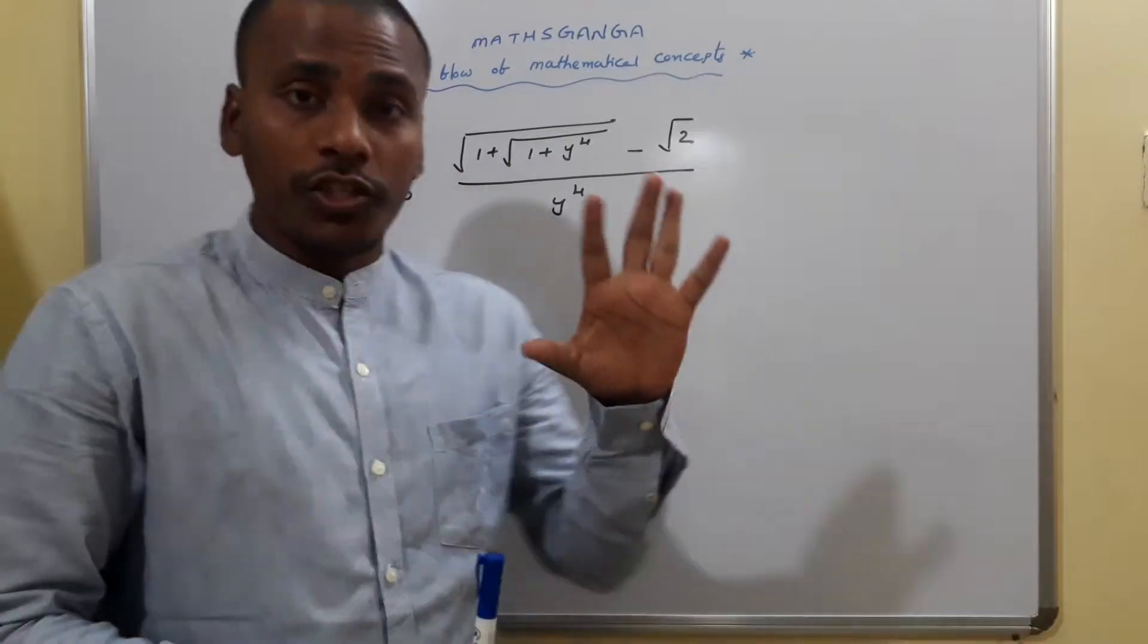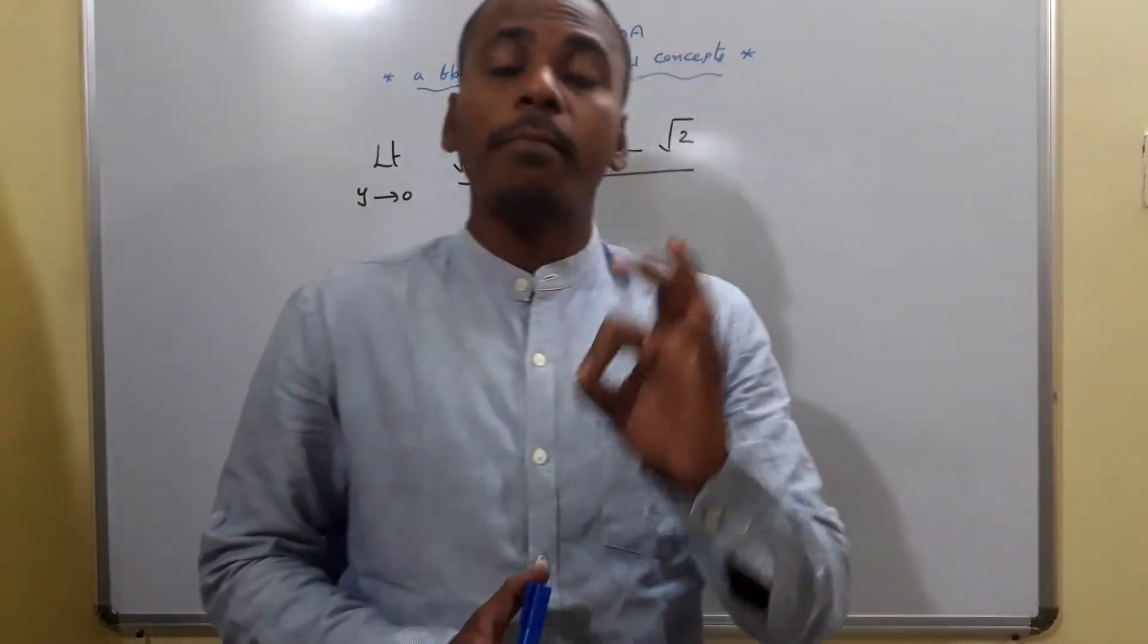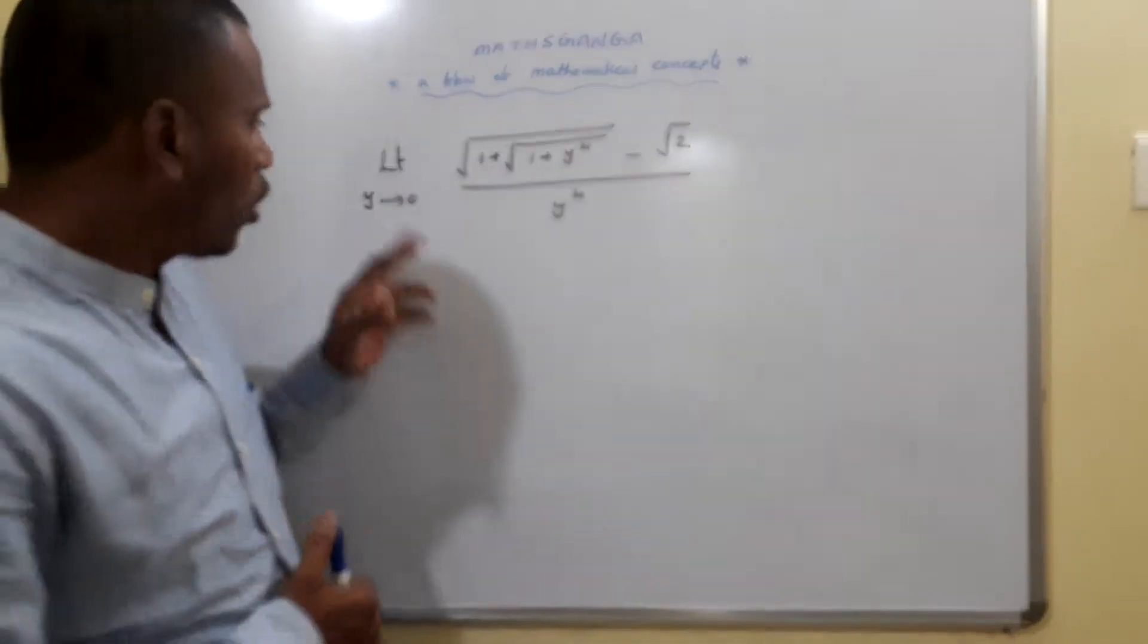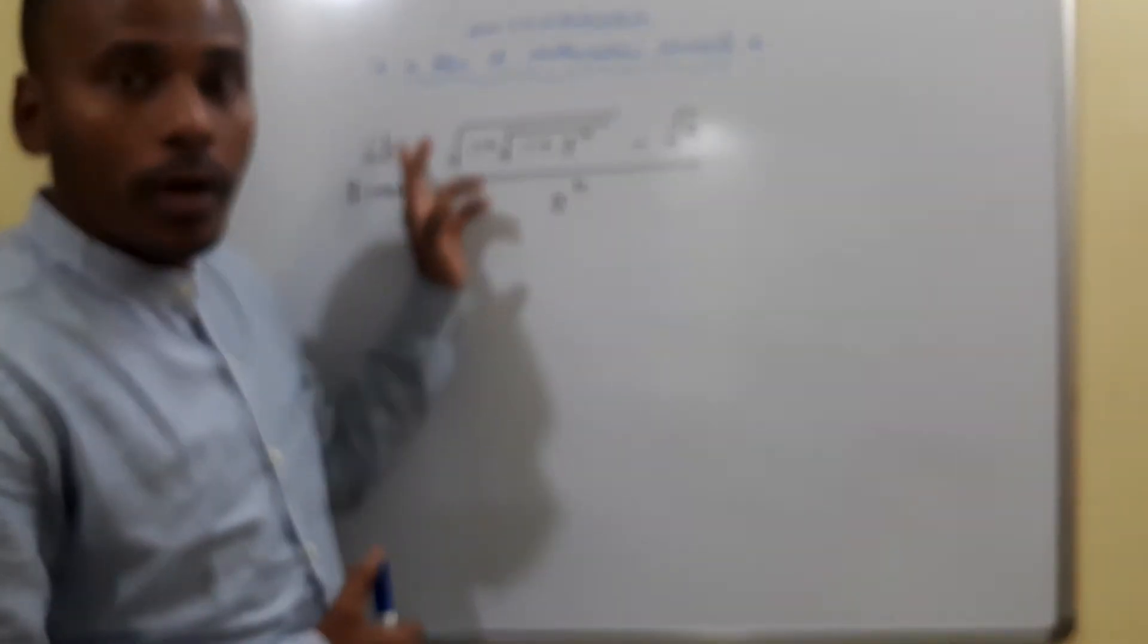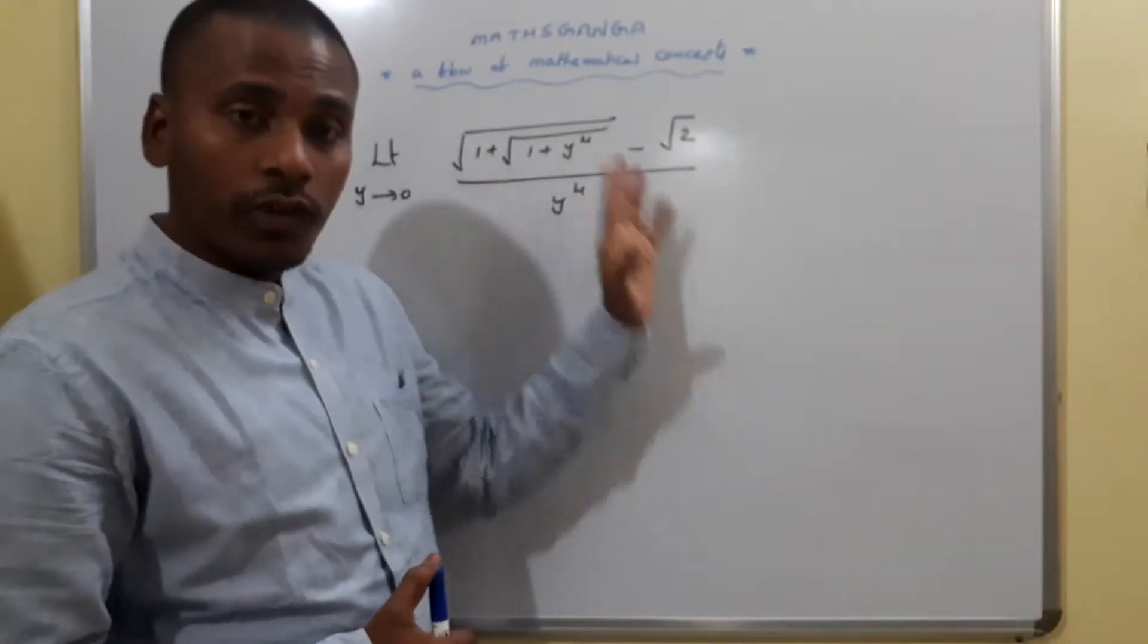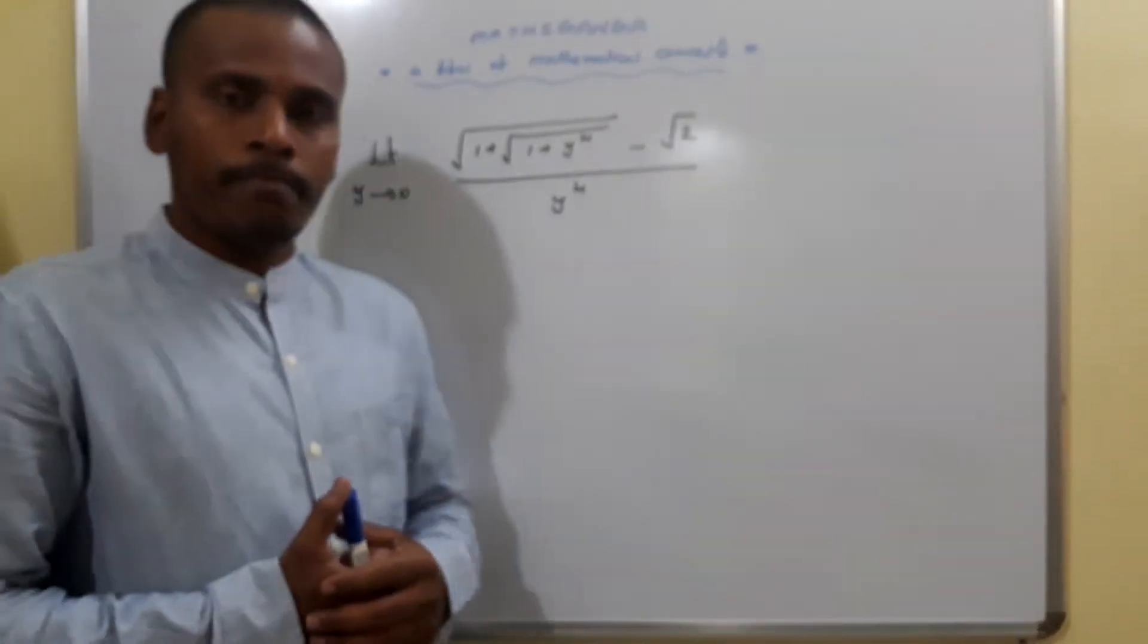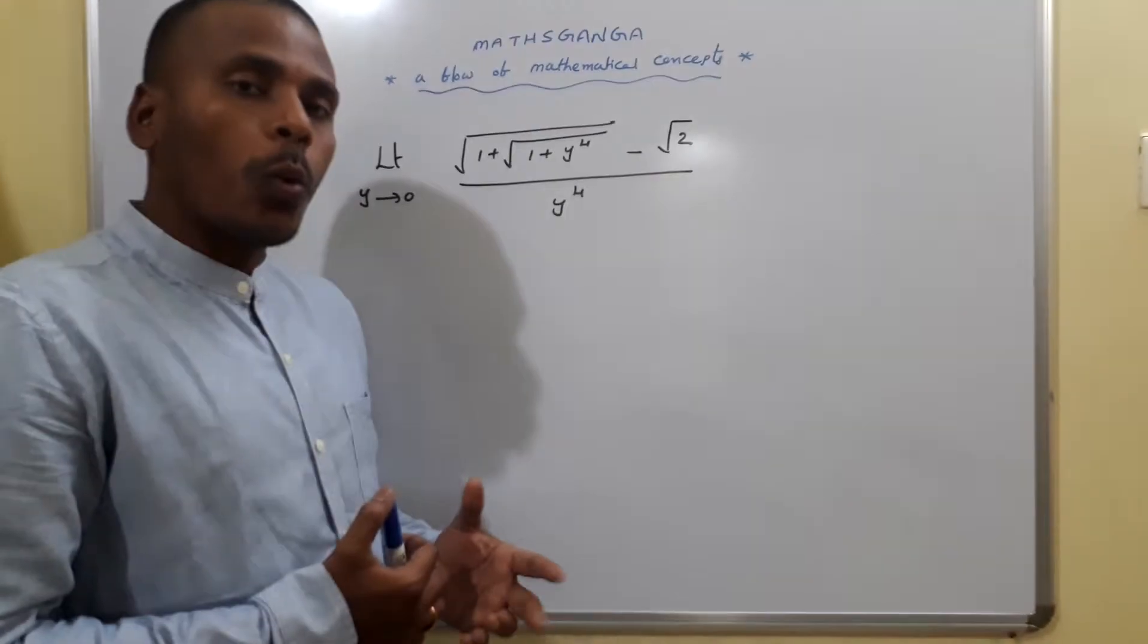This is one more question asked in JEE Main JEE Advanced 2019 from limits and continuity. The question is like this: you need to calculate limit y tends to 0, square root of 1 plus square root of 1 plus y power 4 minus root 2 by y power 4.